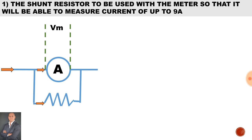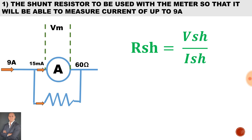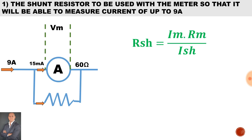We have a parallel branch and the total current being measured is 9 amps. The resistance of the meter is 60 ohms and the current flowing through the meter is 15 milliamps. To calculate the current through the shunt resistor, it'll be the total current minus the current through the meter. Using Ohm's law, R shunt equals V shunt over I shunt. To calculate the volt drop, it's the current through the meter multiplied by the resistance of the meter. I shunt equals total current minus the current through the meter.